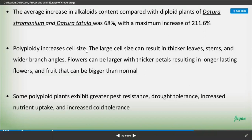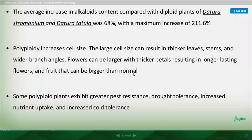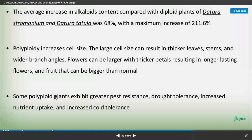Polyploidy increases cell size. The larger cell size can result in thicker leaves, stems, and wider branch angles. Flowers can be larger with thicker petals, resulting in longer-lasting flowers, and fruits can be bigger than normal size.